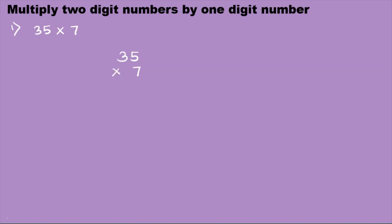So you could read this as 35 times 7. Now we are ready to multiply — this is the standard way. First I start with 7 times 5. 7 times 5 is 35, so I will write 5 here and carry the 3 in the tens place.